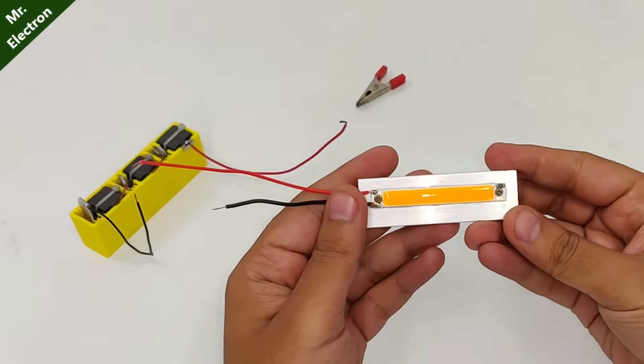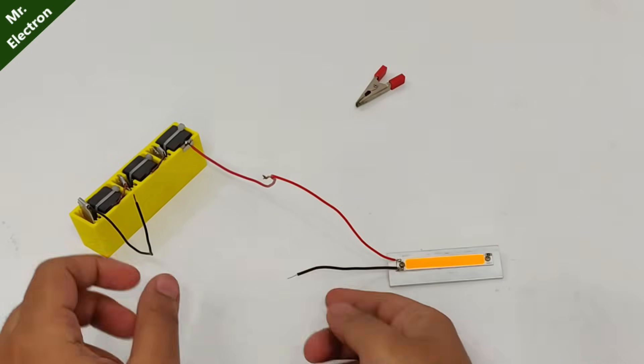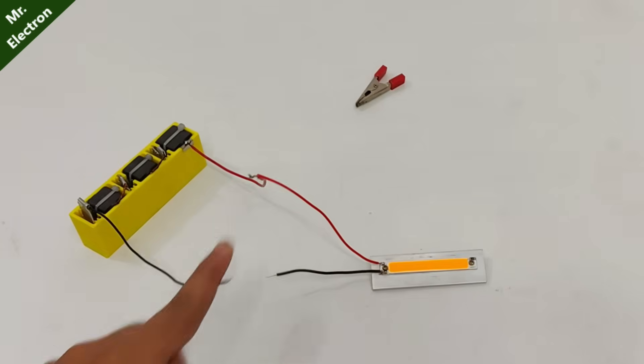Now I have this COB light that I just prepared. Let's connect it and see if we can light this one up. It is 3 watts. Wow, brilliant. Let's turn off the lights.